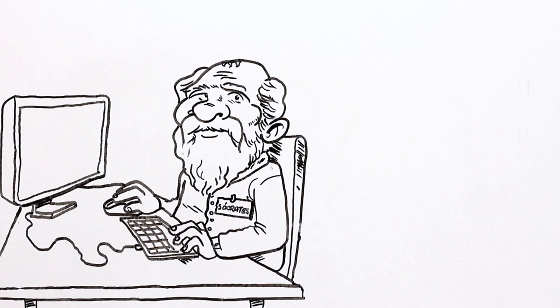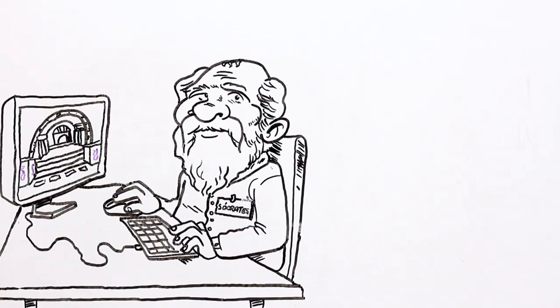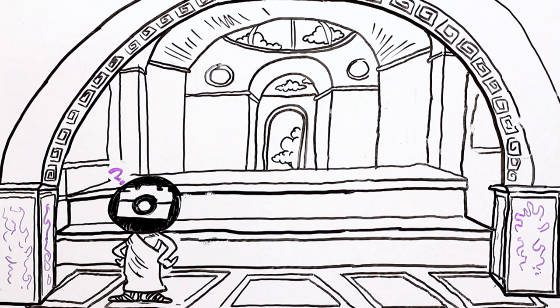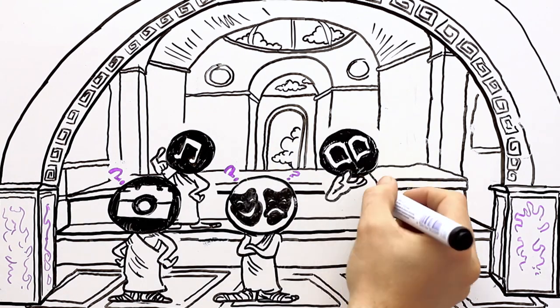This is Socrates, the founder of The Academy, a cultural space offering photography courses, musical training, art workshops and literary encounters.